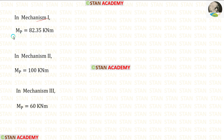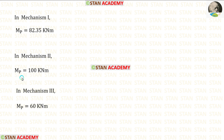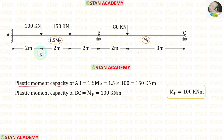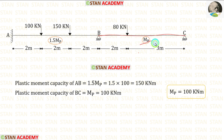In mechanism 1, Mb equals 82.35 kN·m. In mechanism 2, Mb equals 100 kN·m. In mechanism 3, Mb equals 60 kN·m. Out of these three mechanisms, we select the maximum value: 100 kN·m is the plastic moment capacity. The plastic moment capacity of span AB is 1.5 Mb, so we multiply 100 by 1.5 to get 150 kN·m. The plastic moment capacity for span BC is Mb, so it is 100 kN·m. Thank you for watching this video.